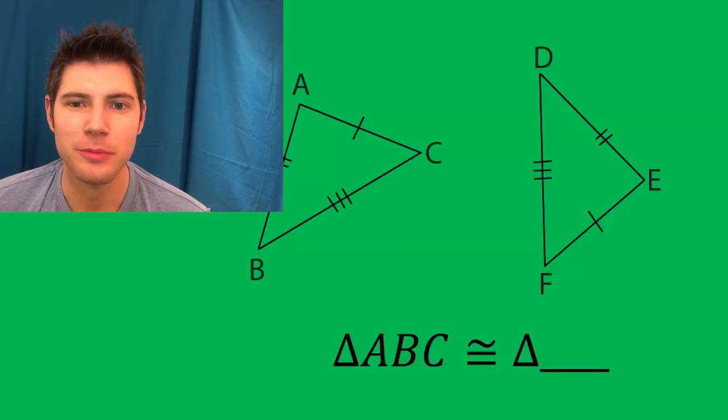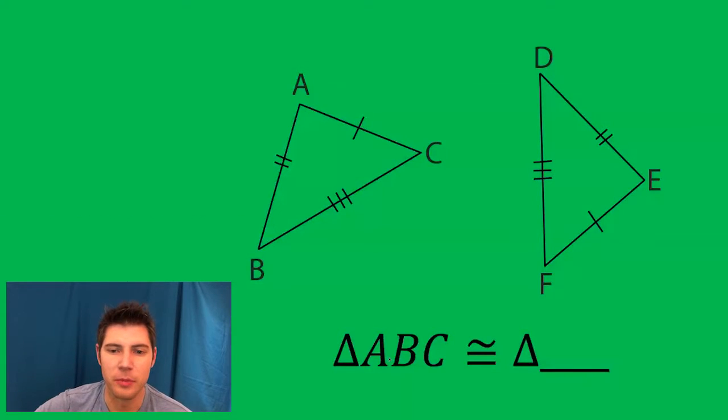Hey guys, welcome to this geometry problem. All they're asking us to do is finish up this congruency statement between these two triangles. So we want to make sure and line up each angle with the corresponding angle in the other triangle.